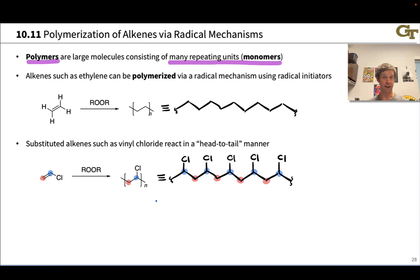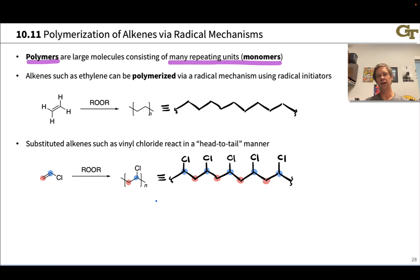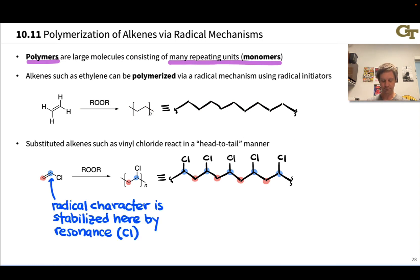The polymer structure alternates red carbon linked to blue, and so on, throughout the chain. This consistency — this selectivity, which is a kind of regioselectivity — means that the chlorines are regularly spaced throughout the chain. This has to do with radical stability and the stabilization of radical character by the adjacent Cl through resonance.